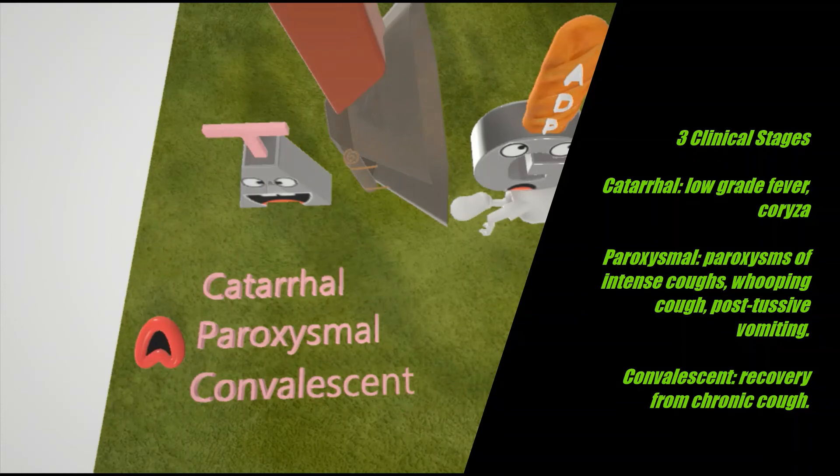Then we have the paroxysmal phase, which is characterized by paroxysms of intense cough, followed by inspiratory whooping cough. And it's also characterized by post-tussive vomiting. Post-tussive vomiting is vomiting after coughing. And we have the mouth over here that's coughing to help us remember the cough associated with whooping cough. Then there's the convalescent phase that's characterized by a gradual recovery from chronic cough.